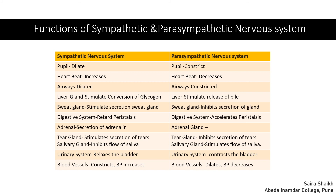During parasympathetic nervous system activation — resting or pleasure time — the pupil constricts, heartbeat decreases, airways constrict, the liver stimulates bile release, sweat glands inhibit sweat secretion, digestive system accelerates peristaltic activity, adrenal gland decreases adrenaline, tear glands inhibit tear secretion, salivary glands stimulate saliva flow, the urinary bladder contracts and decreases in size, blood vessels dilate, and blood pressure decreases. In this way, both systems maintain homeostasis in the body.